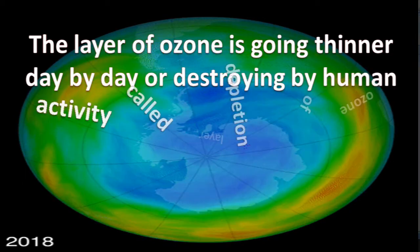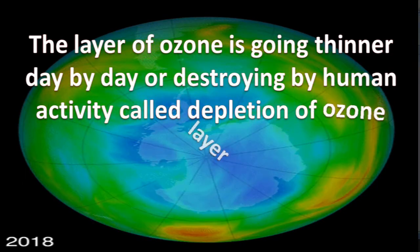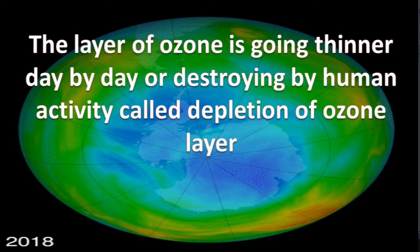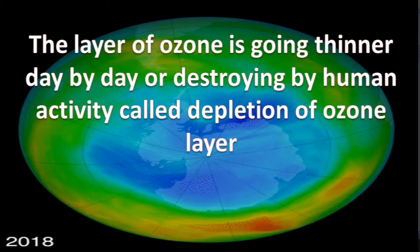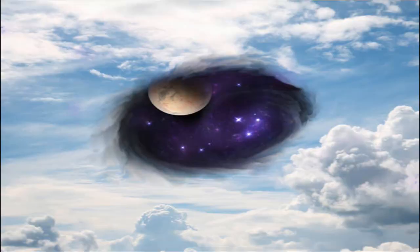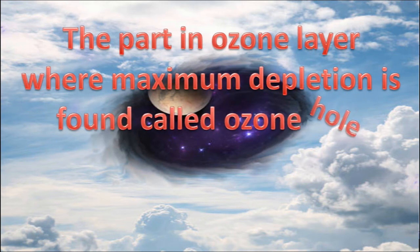The ozone layer is growing thinner day by day, being destroyed by human activity — this is called the depletion of the ozone layer. The part of the ozone layer where maximum depletion occurs is called the ozone hole.